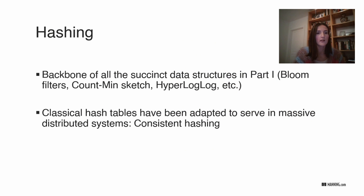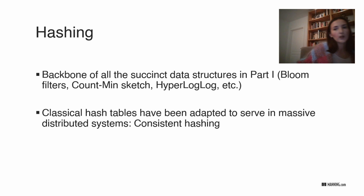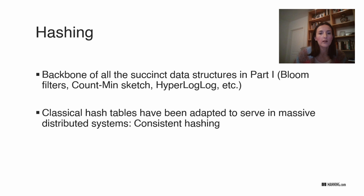One reason is that hashing is a backbone for all the data structures in part one that we talk about. So on one hand, it's good to know hashing starting this book because it's a good review for the chapters to come. However, hash tables have also over time been adapted to serve in massive distributed systems. Today we're going to look at one algorithm for distributed hashing, which is called consistent hashing.